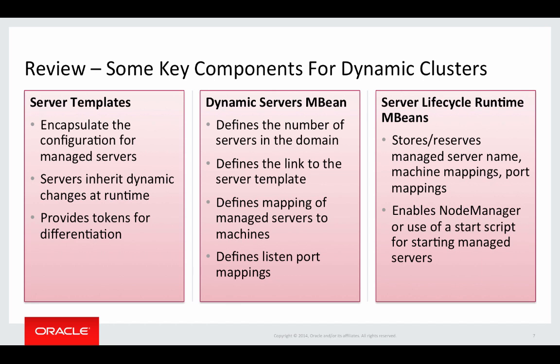In our example today, we'll talk about a floating IP address, and in that floating IP address we'll use a token that represents the number of the server — server 1, server 2, server 3. That number gets inserted and that way you can get a unique floating IP address.